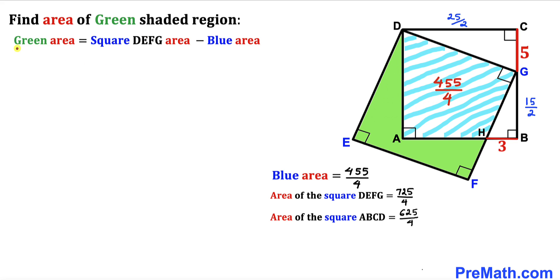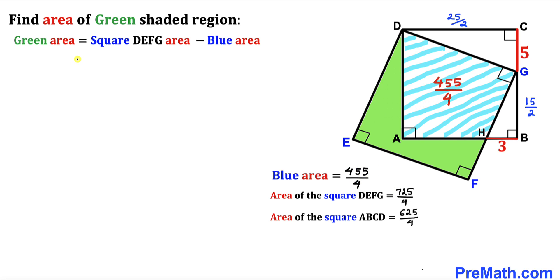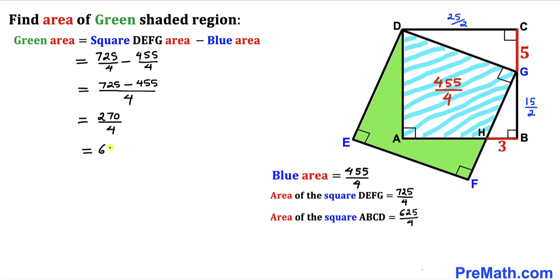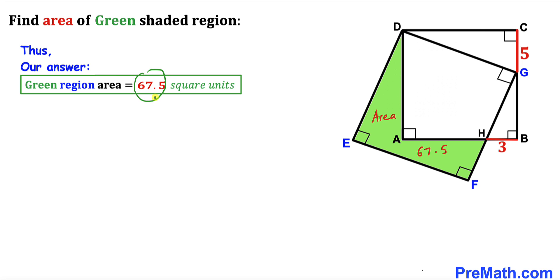Here's our final step: the area of the green shaded region equals the area of square DEFG minus the area of the blue region: 725/4 − 455/4 = 270/4 square units, which equals 67.5 square units. So the green shaded region area turns out to be 67.5 square units.